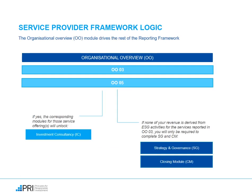The illustration currently displayed shows you how the logic of the Service Provider Reporting Framework works. As mentioned, it is strongly driven by your responses to the Organizational Overview Module, in particular Indicators 003 and 005, where you specify your service offerings and the ESG coverage. For instance, if you report in 003 that you provide investment consultancy services, and in 005 that you derive a certain percentage of revenue from the ESG service in your investment consultancy offering, the Investment Consultancy Module will unlock. If none of your revenue is derived from ESG activities for the services reported in 003, you will only be required to complete the Strategy and Governance and Closing Module.